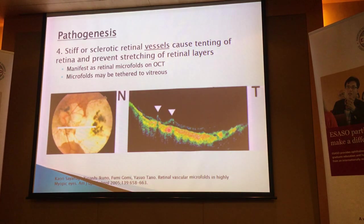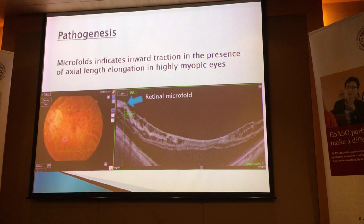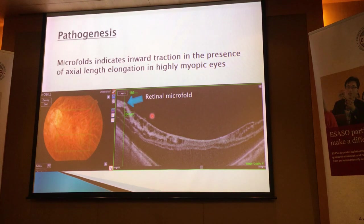They've also reported that at these microfolds, there are usually a lot of vitreous as well, causing traction in these particular areas. This is another example of what we normally would see on OCTs. At the edge of the posterior staphyloma, you'll see that there is a blood vessel just here, and you can see a little knob in that area — what we call microfolds — indicating significant inward traction in the presence of axial elongation in a very highly myopic eye. You can see also that the internal limiting membrane is being lifted up as well.